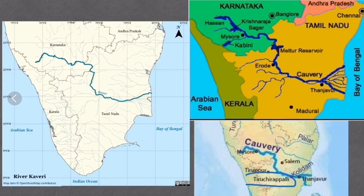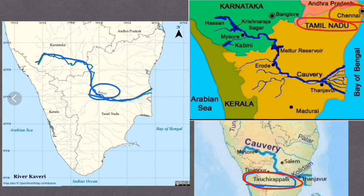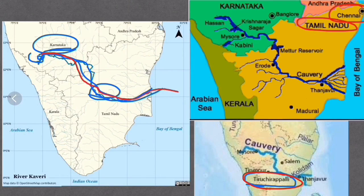The last question: Tiruchirapalli, also known as Trichy, is a city in Tamil Nadu. The capital of Tamil Nadu is Chennai. Tiruchirapalli is situated on the banks of the Kaveri River. The Kaveri River originates in Karnataka and flows through Karnataka and Tamil Nadu.